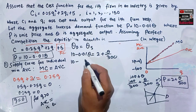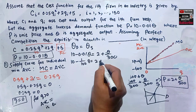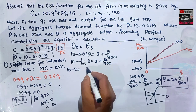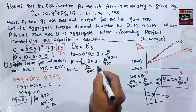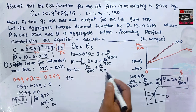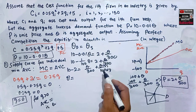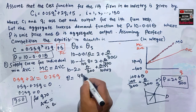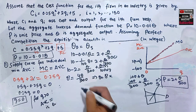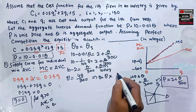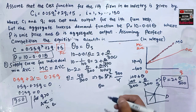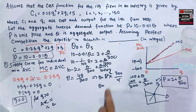Solving: 10 − (1/100)Q = 2 + Q/300. Rearranging: 10 − 2 = Q/300 + Q/100, so 8 = (Q + 3Q)/300 = 4Q/300. Therefore Q = 8 × (300/4) = 600.